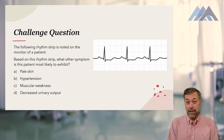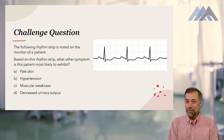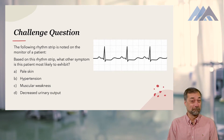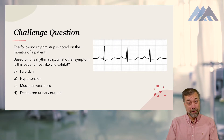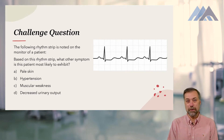The answer choices are: A — pale skin, B — hypertension, C — muscular weakness, or D — decreased urinary output. Look at that rhythm strip and see if you can figure out where this question is taking you. As always, I'll give you the answer in a little bit, but let's continue with the material.